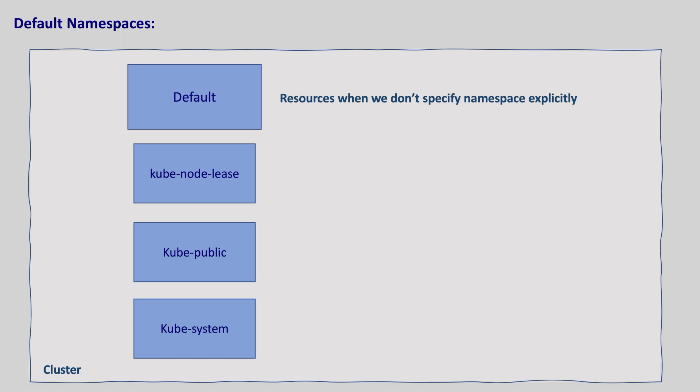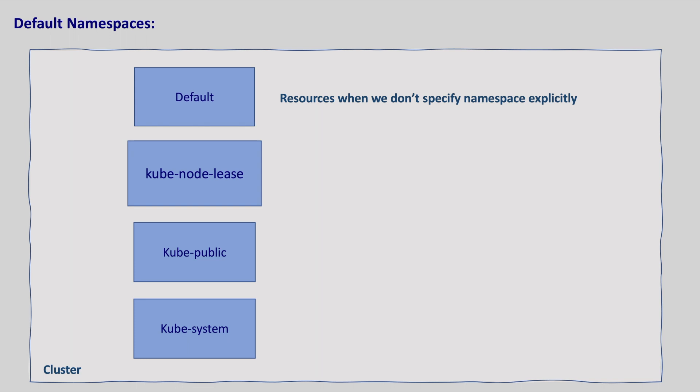So whatever resources we created so far — like the nginx deployment, nginx service, and nginx ingress rule — should be in the default namespace, as we never mentioned in which namespace those should get created. The next namespace is kube-node-lease. In the introduction to Kubernetes session, we discussed that if a node goes down, the pods in that node will be recreated in a different healthy node. Lease objects in the kube-node-lease namespace help with that. Every node has a lease object associated with it, and these lease objects send heartbeats to the control plane to help determine the availability of each node and to take action when failures are detected.